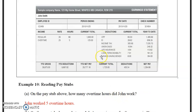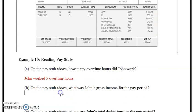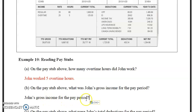What was John's gross income for the pay period? The pay period information is the current total, not the year-to-date gross. The current total is what you worked: $1,600 at regular pay plus $125 overtime equals $1,725. So John's gross income for the pay period was $1,725.